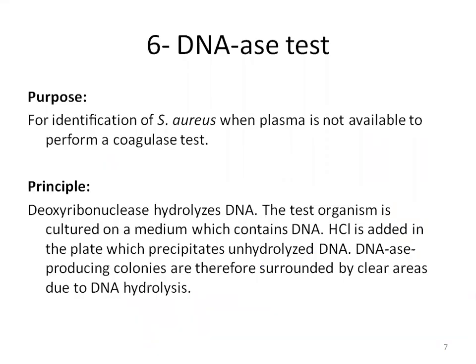The next test is the DNase test. This test is used to help identify Staphylococcus aureus, which produces deoxyribonuclease (DNase) enzymes. The DNase test is particularly useful when plasma is not available to perform a coagulase test, or when the results of the coagulase test are difficult to interpret. The principle is that deoxyribonuclease hydrolyzes DNA; the test organism is cultured on a medium containing DNA.